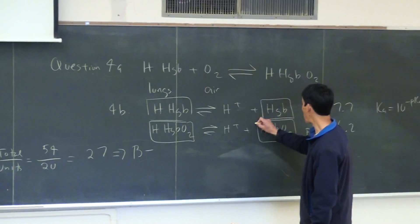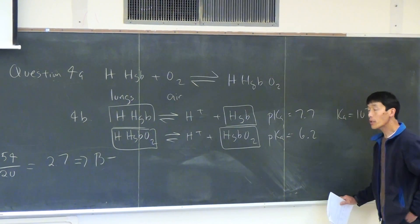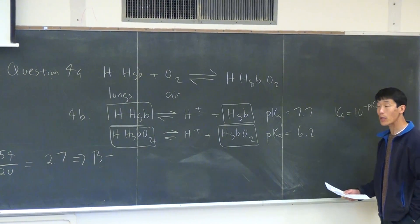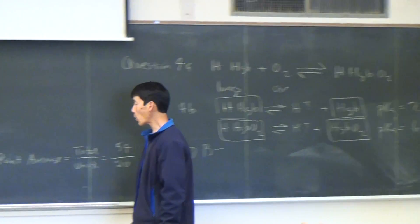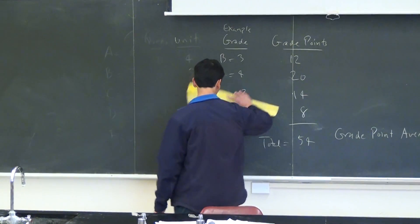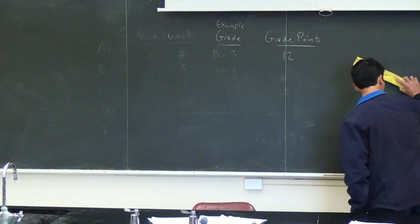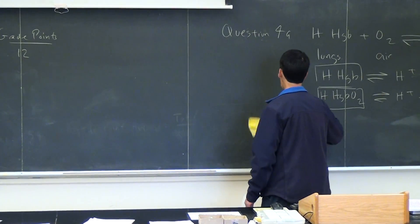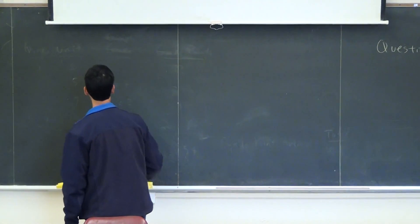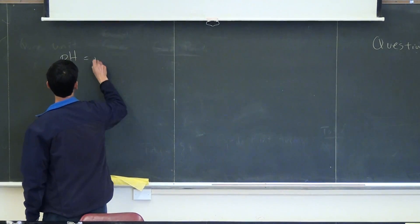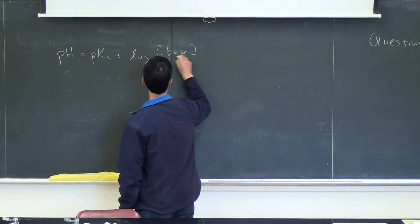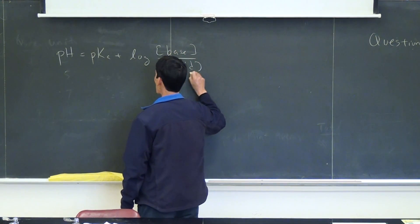We want to figure out, based on the pH of blood which is 7.4, which substance is present in the highest amount. The equation to answer this question is the Henderson-Hasselbalch equation.